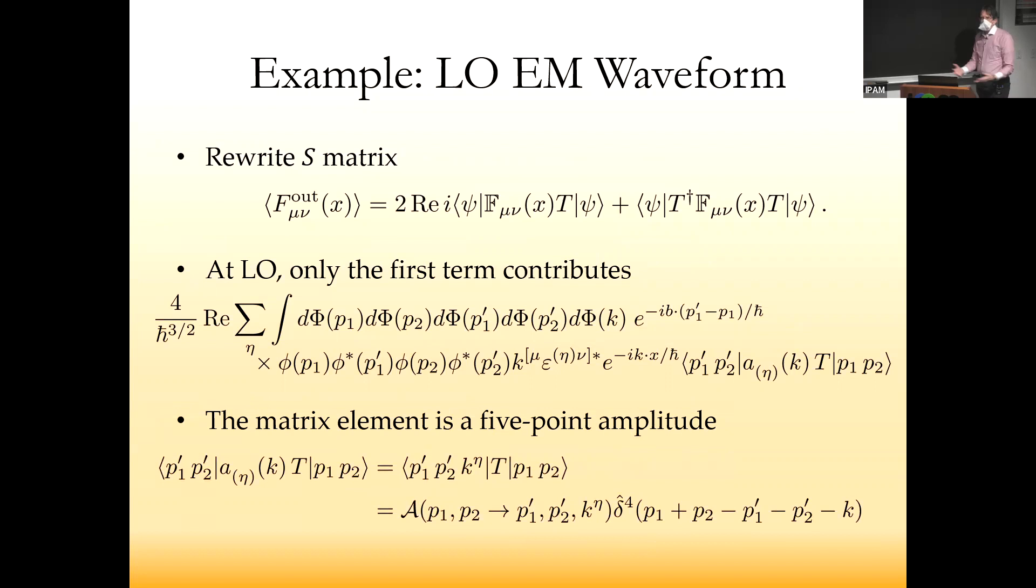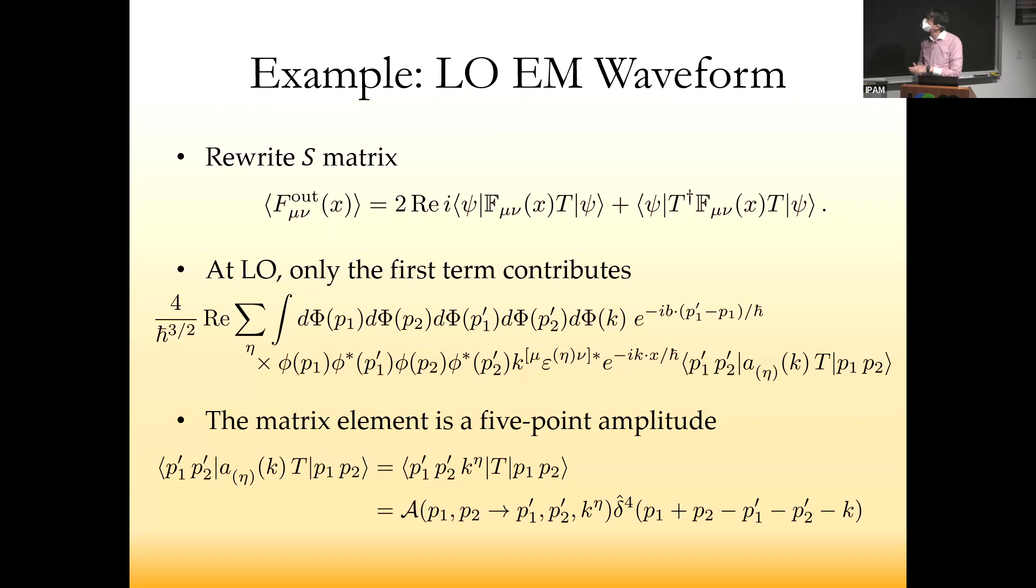We expand the S matrix. There's no radiation in initial states, so we get two terms which can be rewritten as commutators. You have the virtual term and the cut term, linear and quadratic in the T matrix—order G cubed for the first, order G to the fifth and higher for the second. At leading order, only the first term contributes. The first formula for the electromagnetic tensor is true to all orders, so you expand order by order in perturbation theory.